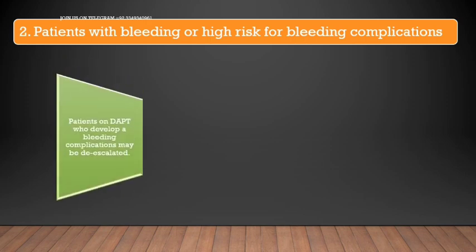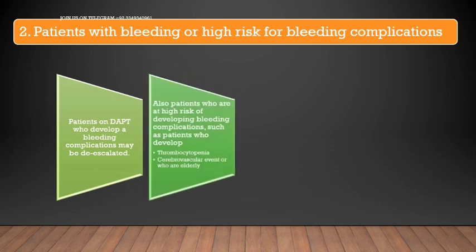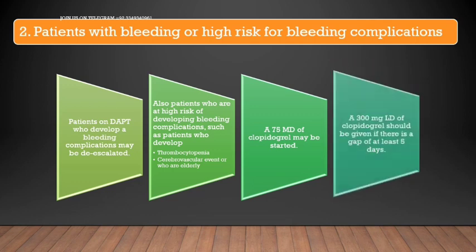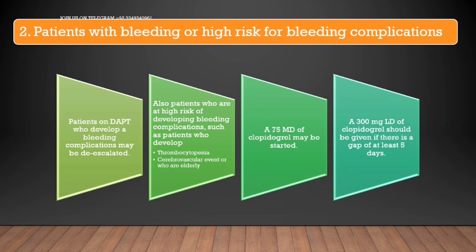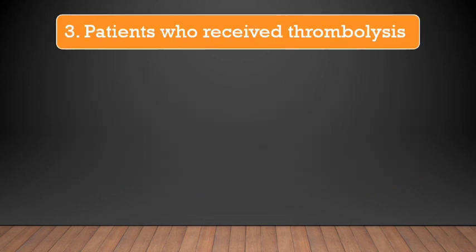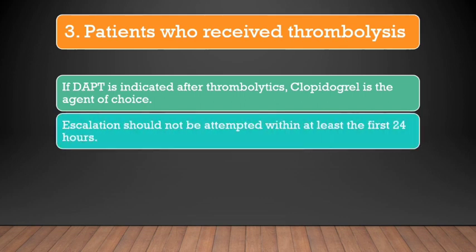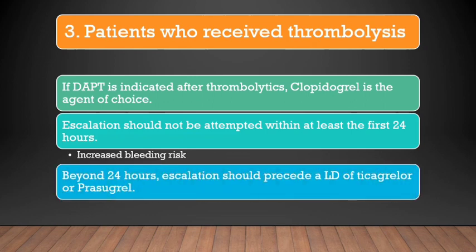For patients with bleeding or high risk for bleeding: patients on dual antiplatelet therapy who develop bleeding complications may be de-escalated. High-risk patients include those who develop thrombocytopenia, cerebrovascular events, or who are elderly. A 75 mg maintenance dose of clopidogrel is used; a 300 mg loading dose should be given if there is a gap of at least five days. For patients who received thrombolytics, if dual antiplatelet therapy is indicated, clopidogrel is the agent of choice. Escalation should not be attempted within the first 24 hours due to increased bleeding risk; beyond 24 hours, escalation should precede a loading dose of ticagrelor or prasugrel.